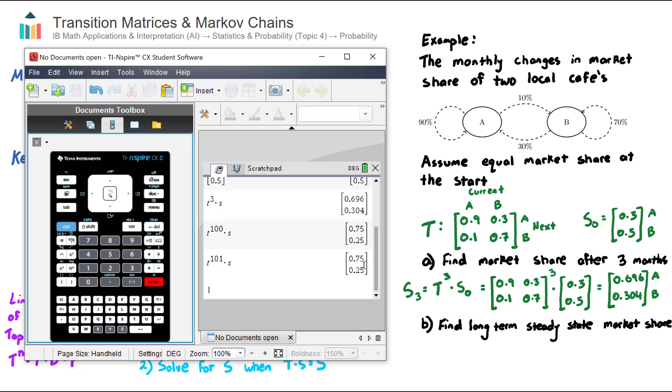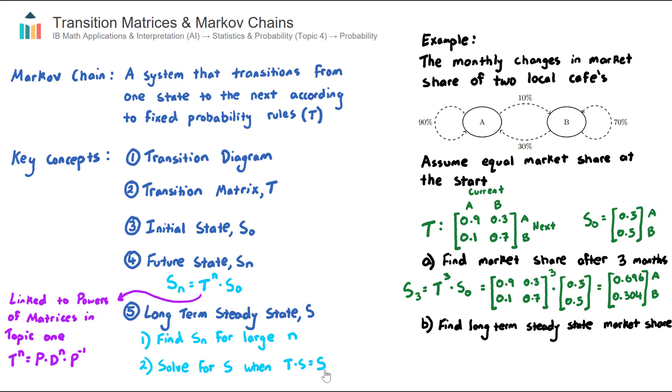The second way to find the long-term steady state is using an algebraic technique, which is to solve for S, which is the long-term steady state matrix, which we don't know yet, this is an unknown, when T times S is equal to S. And the way to think about this is that if we multiply the transition matrix by some sort of future state, if it equals itself, then the transition matrix is having no impact on the state. So therefore, we have reached a long-term steady state at this point. I won't go through all the algebra of this. That'll probably take five or so minutes to talk that through. And there are plenty of questions in the question bank that I do show the solution and steps for this. But just to recap, there are two ways to find the long-term steady state for a given system.